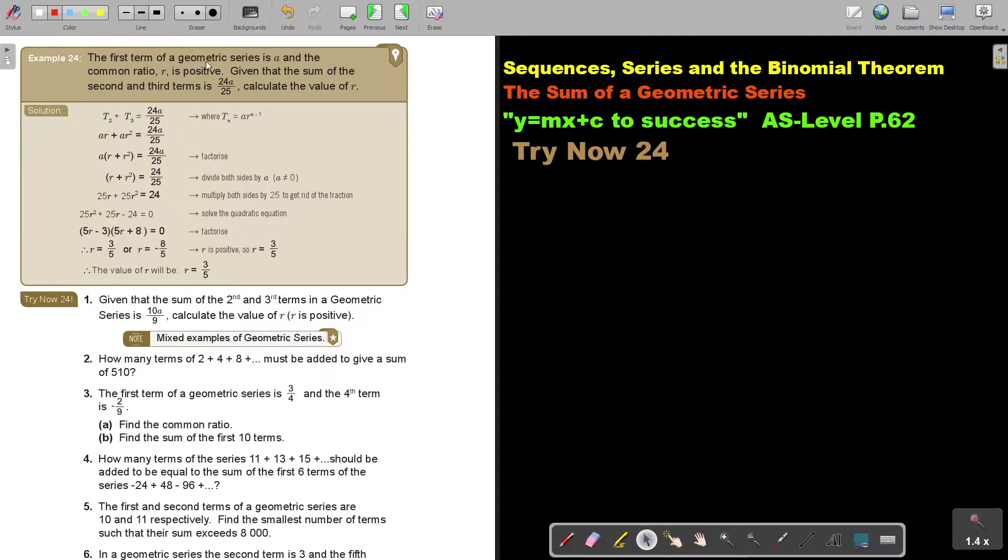The first term of a geometric series is A and the common ratio R is positive. Given that the sum of the second and the third term is 24A over 25, calculate the value of R.